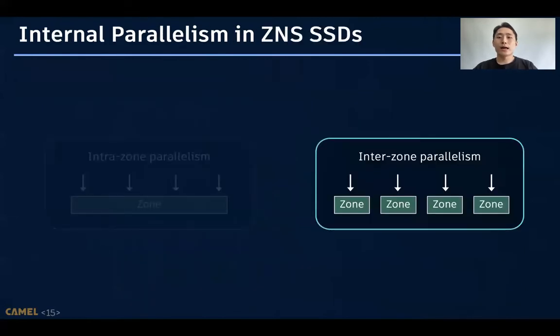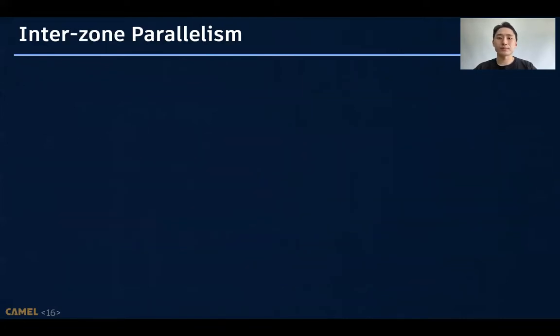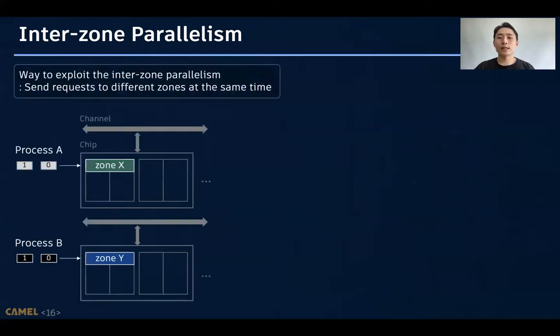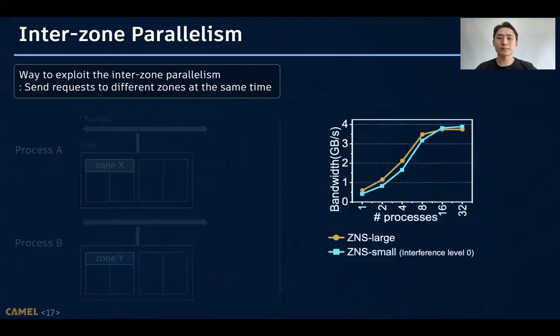To get a high performance in small zone devices, we should exploit the inter-zone parallelism. Inter-zone parallelism is the parallelism which can be utilized when there are accesses to multiple zones at the same time, and we can exploit it by making multiple processes send requests to their dedicated zones. As shown here, if the small zones are not on the same flash resource, the requests can be served in parallel. We analyzed the performance by increasing the number of processes, and found that ZNS small can also achieve the maximum bandwidth by exploiting the inter-zone parallelism.